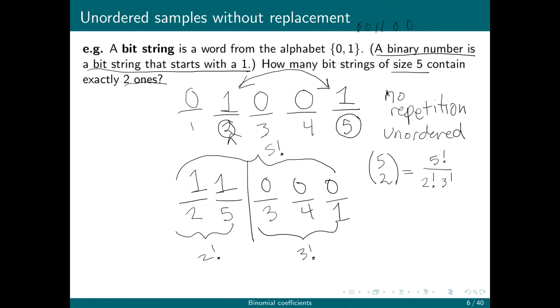We can compute this. We're going to exploit the recursive property of the factorial. So 5 factorial is 5 times 4 times 3 factorial. 2 factorial is just 2, so this becomes 5 times 2, which is 10. There are 10 bit strings of length 5 with exactly 2 ones.